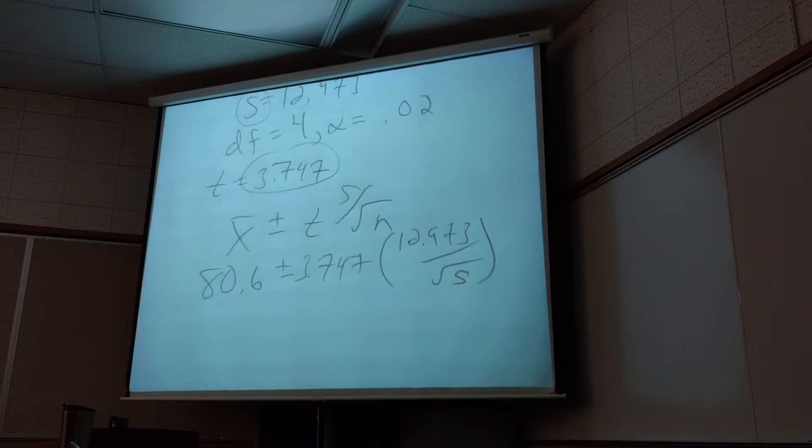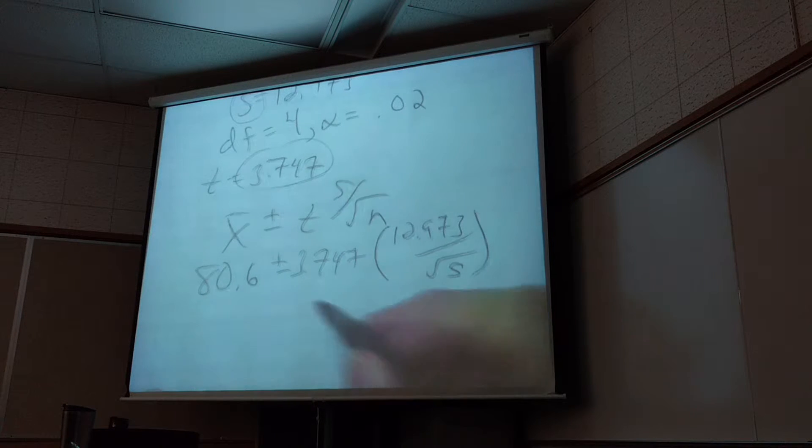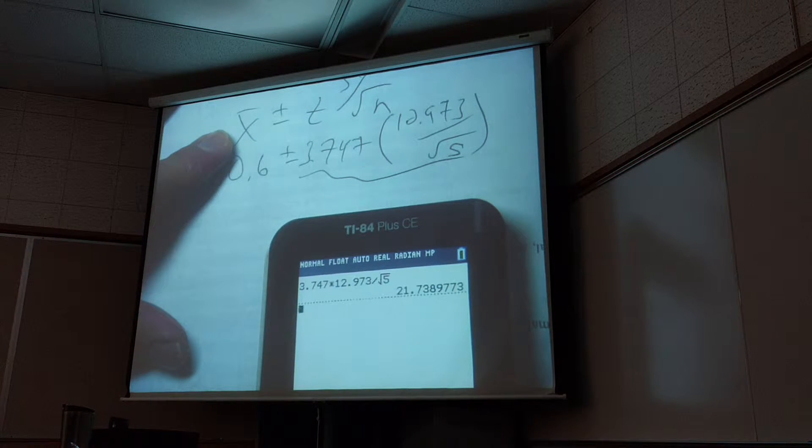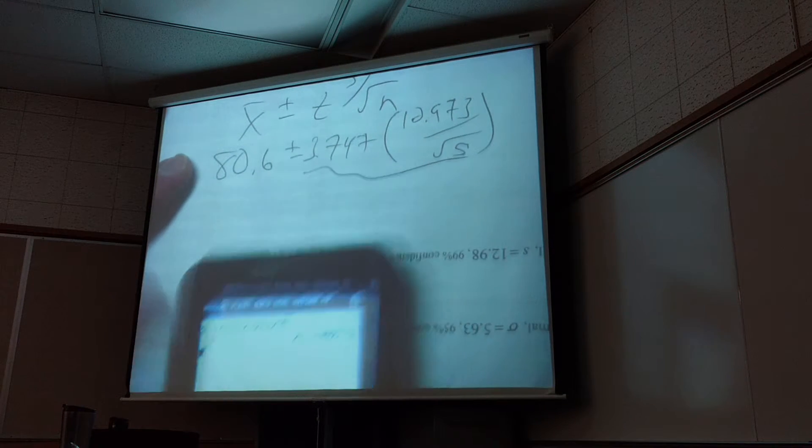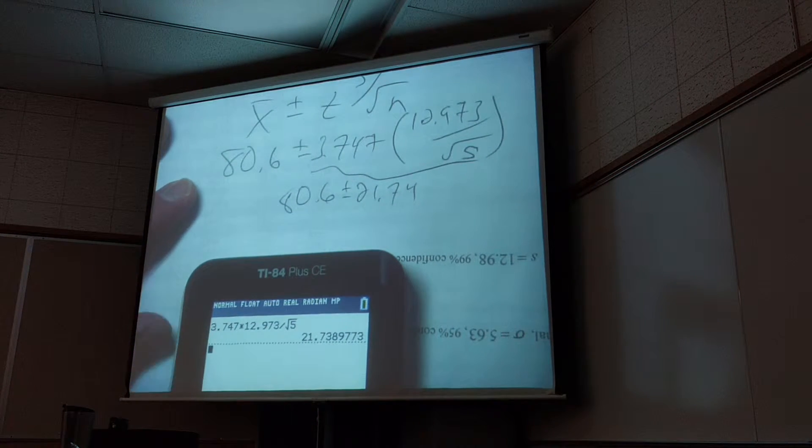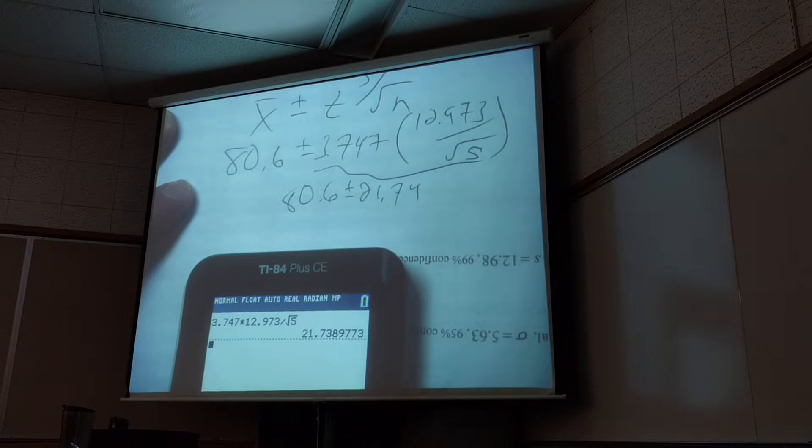I like it. That's 12.973. What's the standard? 7.3. Yeah, there you go. I like it. Alright, so now you just plug that in to the calculator. What'd you get for the error? Let's see what I get. Yeah, I like it. 21.74. 80.6 plus or minus 21.74. Always round.